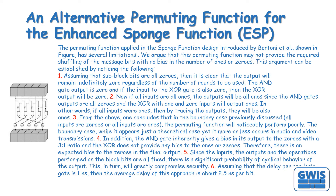The permuting function applied in the sponge function design introduced by Bertoni et al. has several limitations. We argue that this permuting function may not provide the required shuffling of the message bits with no bias in the number of ones or zeros. First, assuming that sub-block bits are all zeros, the output will remain indefinitely zero regardless of the number of rounds, since the NOT gate output is zero and if the input to the XOR gate is also zero, the XOR output will be zero. Second, if all inputs are all ones, the outputs will be all ones, since the NOT gate outputs are all zeros and XOR with 1 and 0 inputs will output ones.